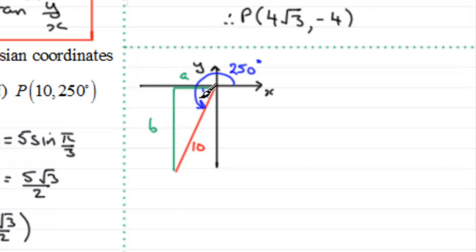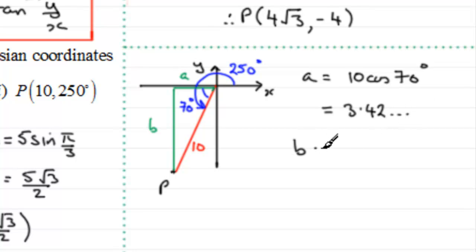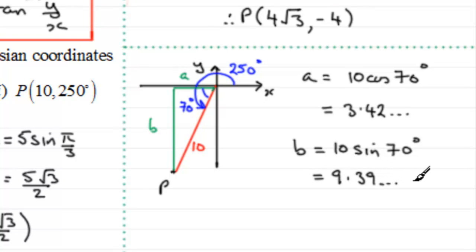The acute angle inside the triangle is 70 degrees — since 250 − 180 = 70. For a: a equals 10 × cosine 70°. Working this out on a calculator gives approximately 3.42. For b: b equals 10 × sine 70°, and working that out on a calculator gives approximately 9.39.